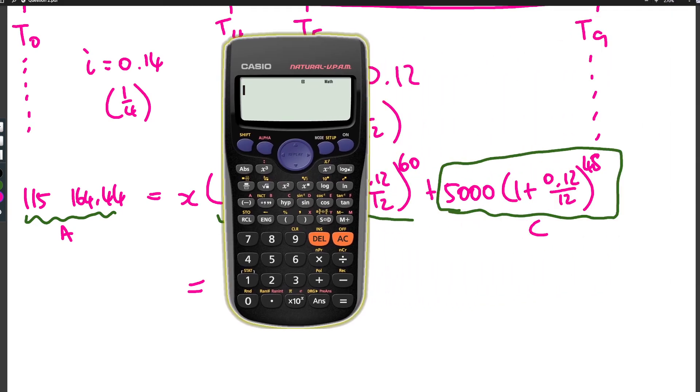So I'm going to say 115,164.44 minus that value that I called c: 5000 times 1 plus 0.12 over 12, isn't this just scintillating watching the calculator, to the power of 48. Okay, so that's now what's on the left hand side: 107,103.30 blah blah blah. I don't want to round off yet, so I'm gonna shift store that in a. I called it a earlier, so that's a.